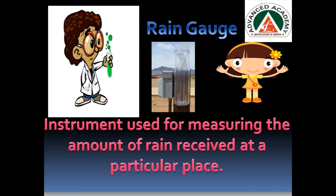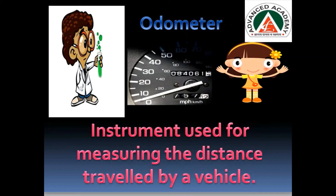Then uncle showed another instrument and told her, 'This is an odometer, Pihu. This instrument is used for measuring the distance travelled by a vehicle.' Pihu understood. Whatever vehicle we are using — either a two-wheeler or a car — there is an odometer, and that's how we know how much distance we have travelled.